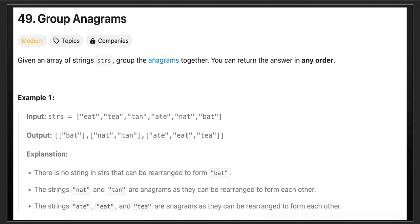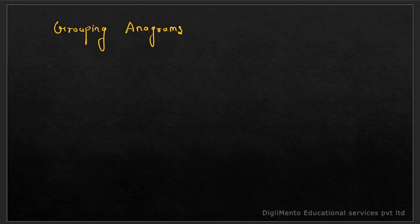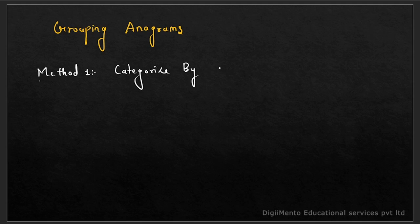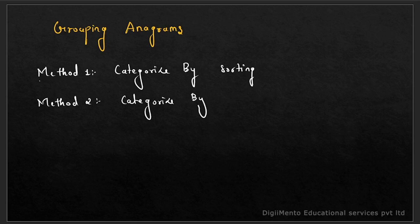Those were the real life examples where we use anagrams. Now let's see in the coding how we solve the problem - what is the best case, what is the worst case, and how we can optimize it. There are two ways to solve this. Method one is categorize by sorting, and method two is categorize by frequency.